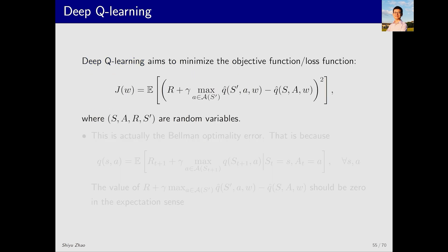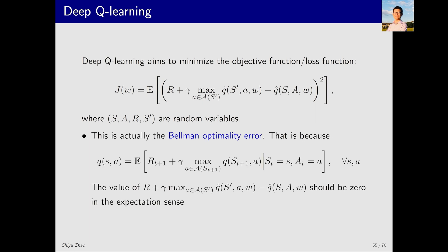To train a neural network we need a loss function or what we call an objective function. Here the objective function corresponds to J(W). What is it? It's an expectation of a squared term where the term inside the parentheses has this expression. If you're familiar with Q-learning you know that it's the TD target of Q-learning.